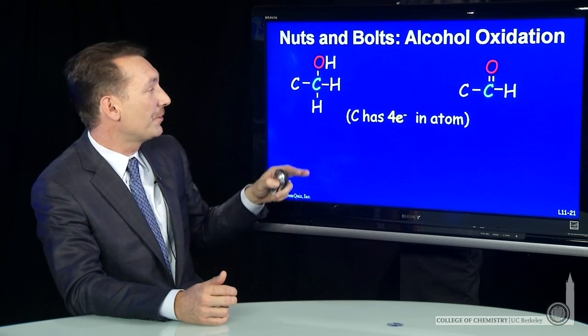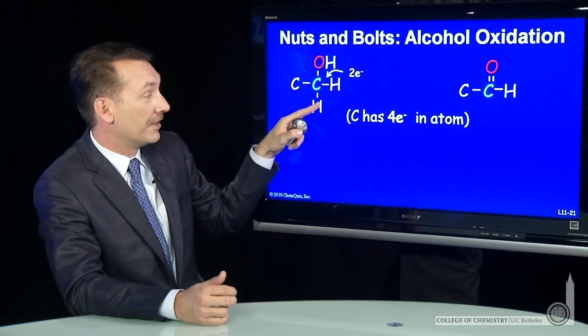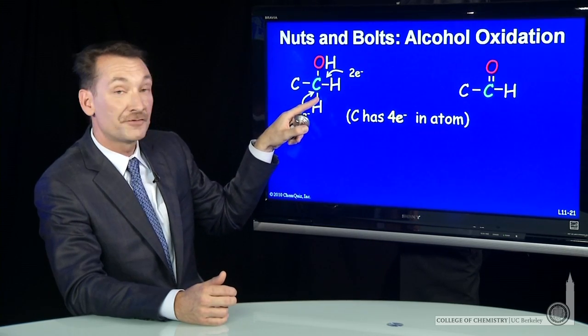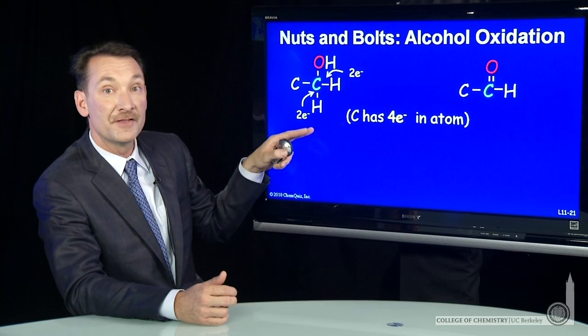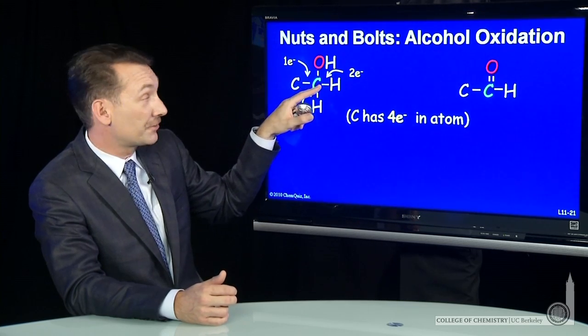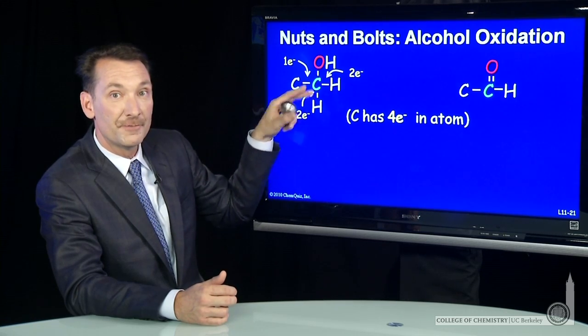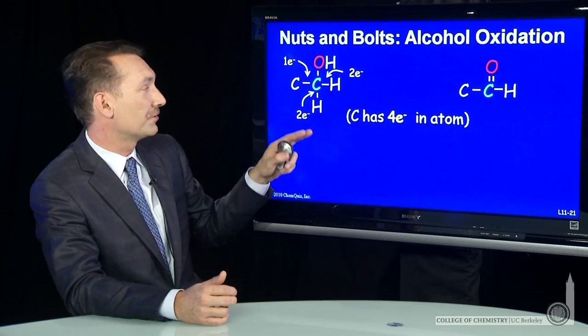So to count them up, the carbon gets two electrons from that bond. It gets two electrons from this bond, being more electronegative than the hydrogen. It gets one electron from this bond because it's equally electronegative with this carbon, and it gets none from this bond because oxygen is the more electronegative element.